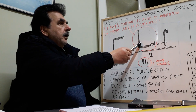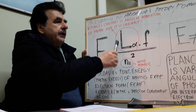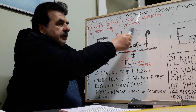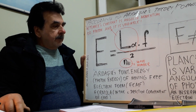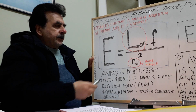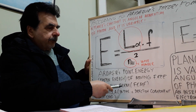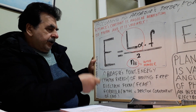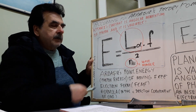Planck's constant is the angular momentum of the photon, and it is variable. This is the wave number. This is angular momentum — variable angular momentum, or variable Planck's constant. This is the point energy, the photon energy of a moving free electron motion form, in the c-direction component of the electron motion form. This is my formula.